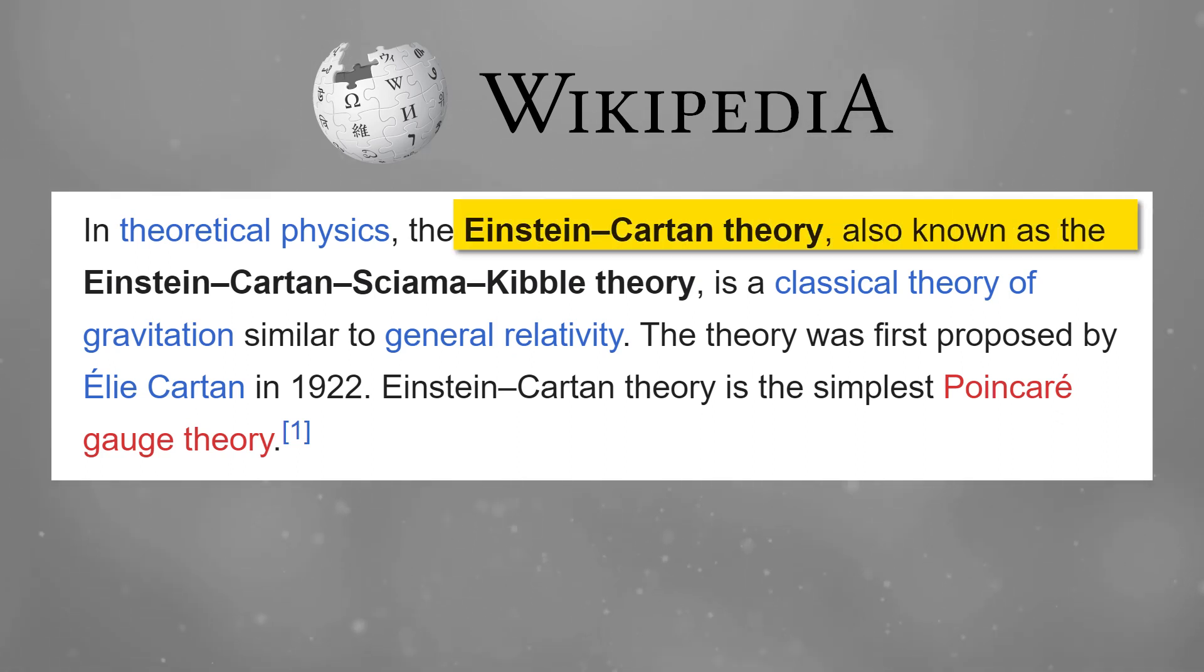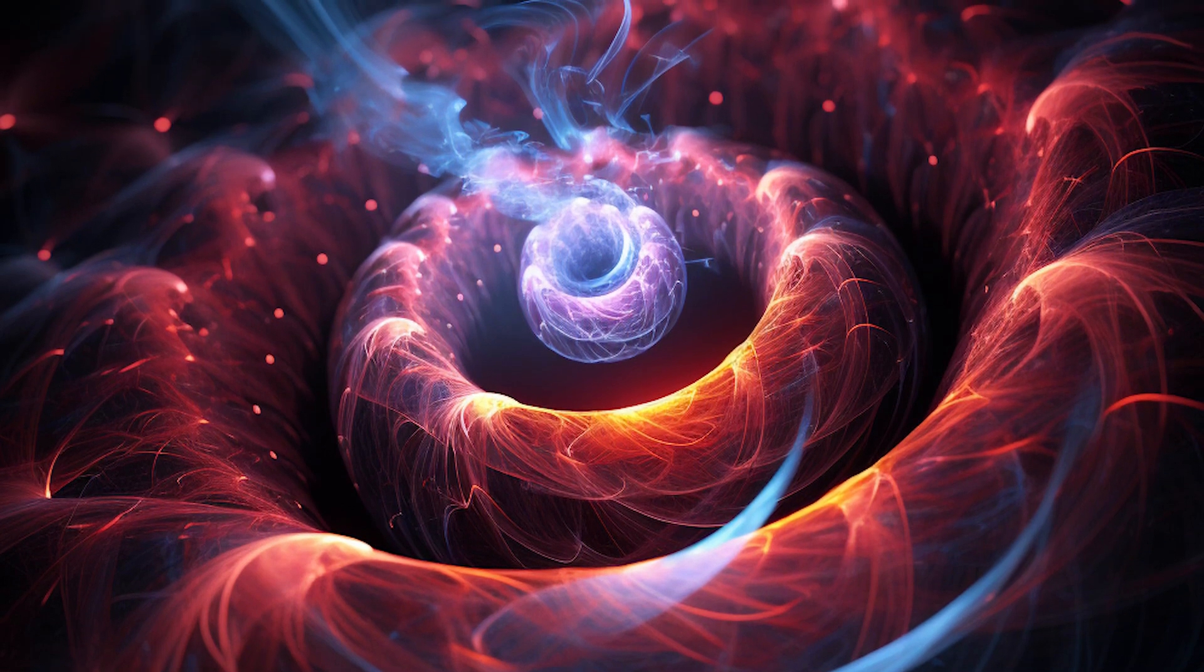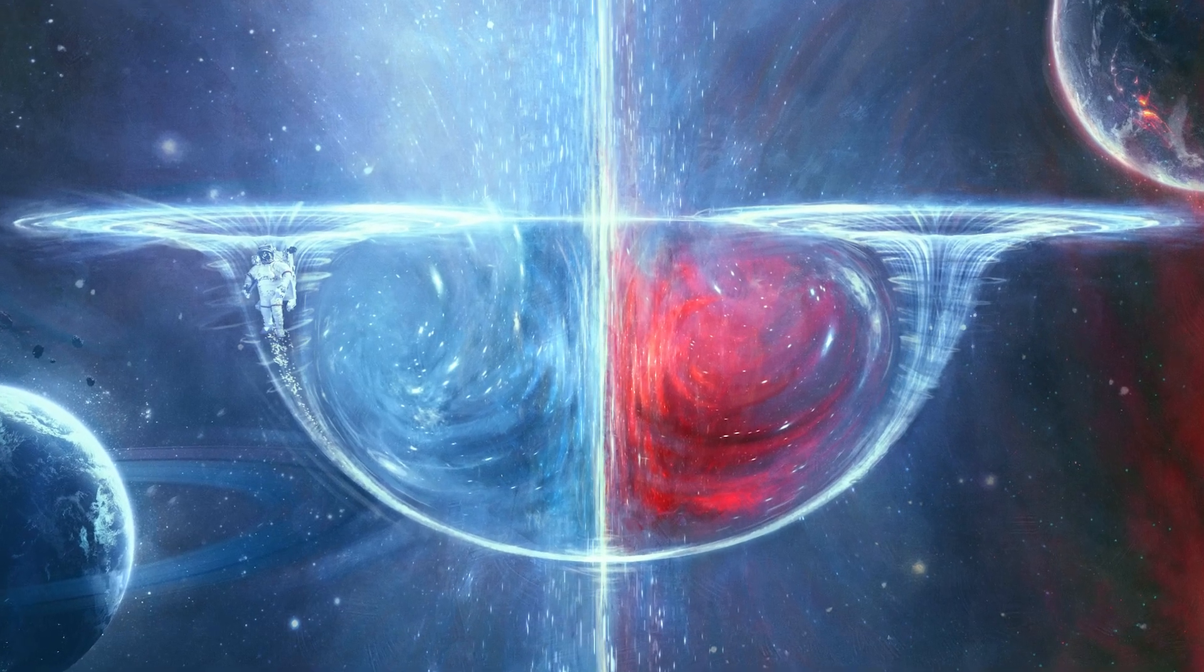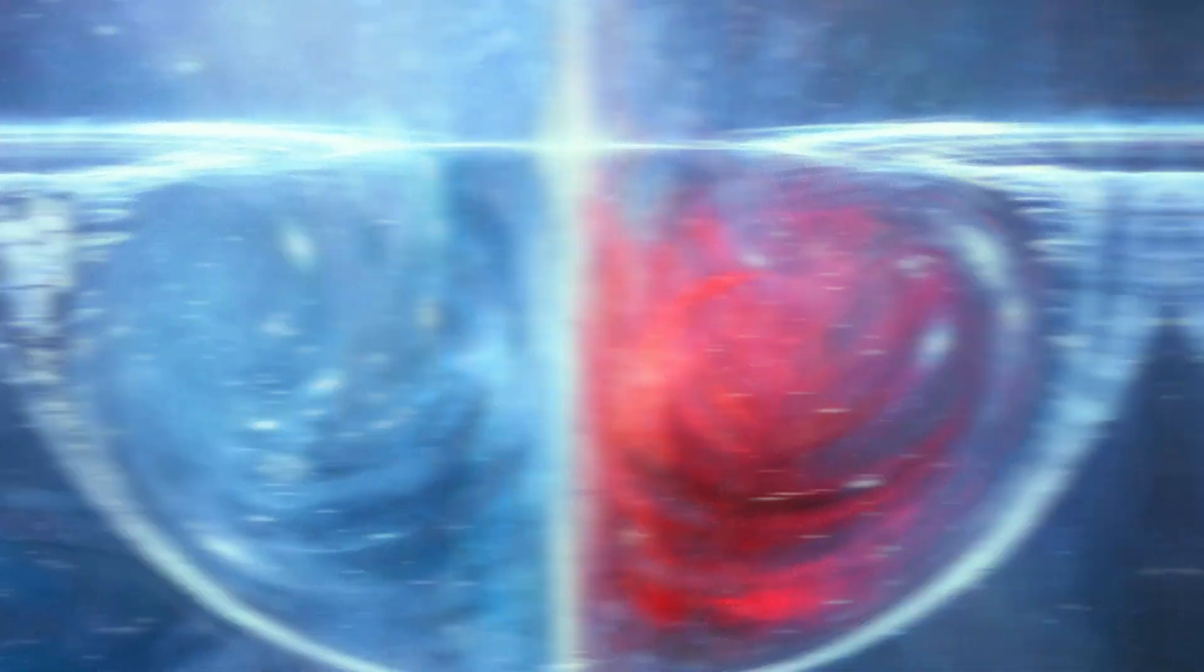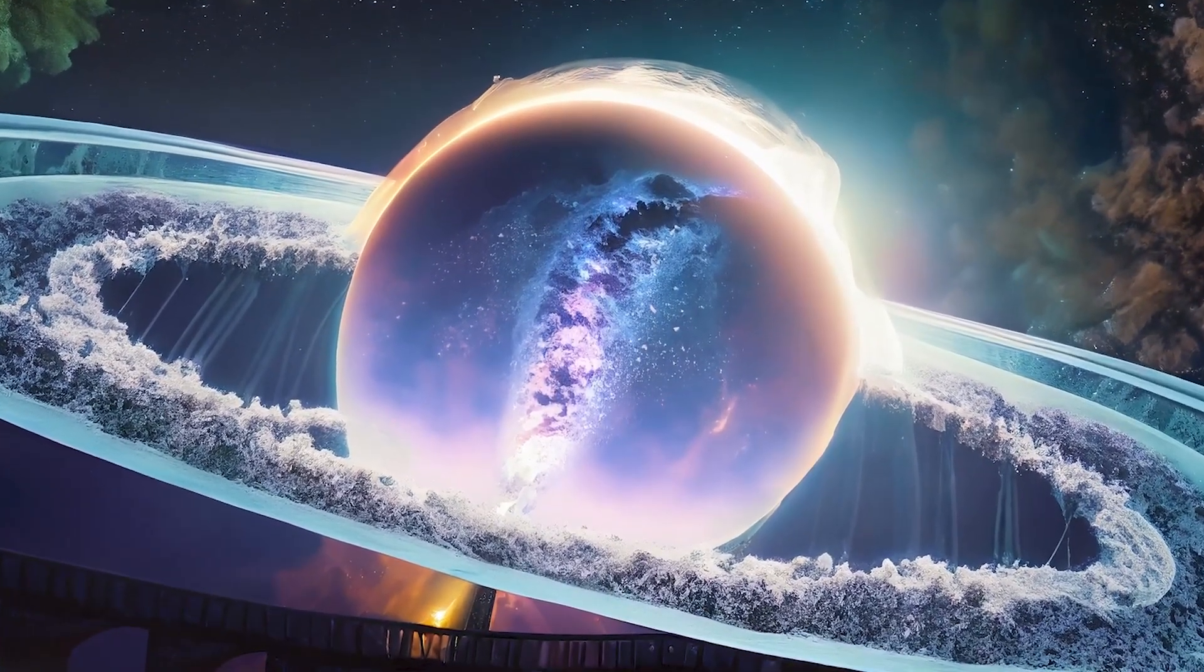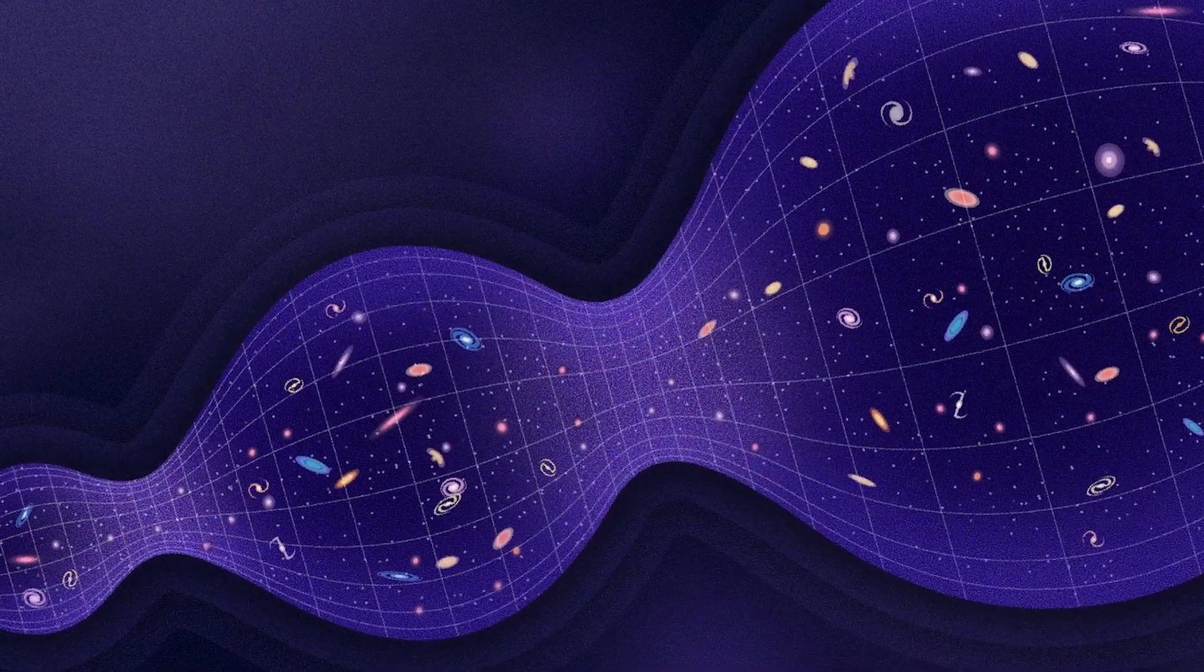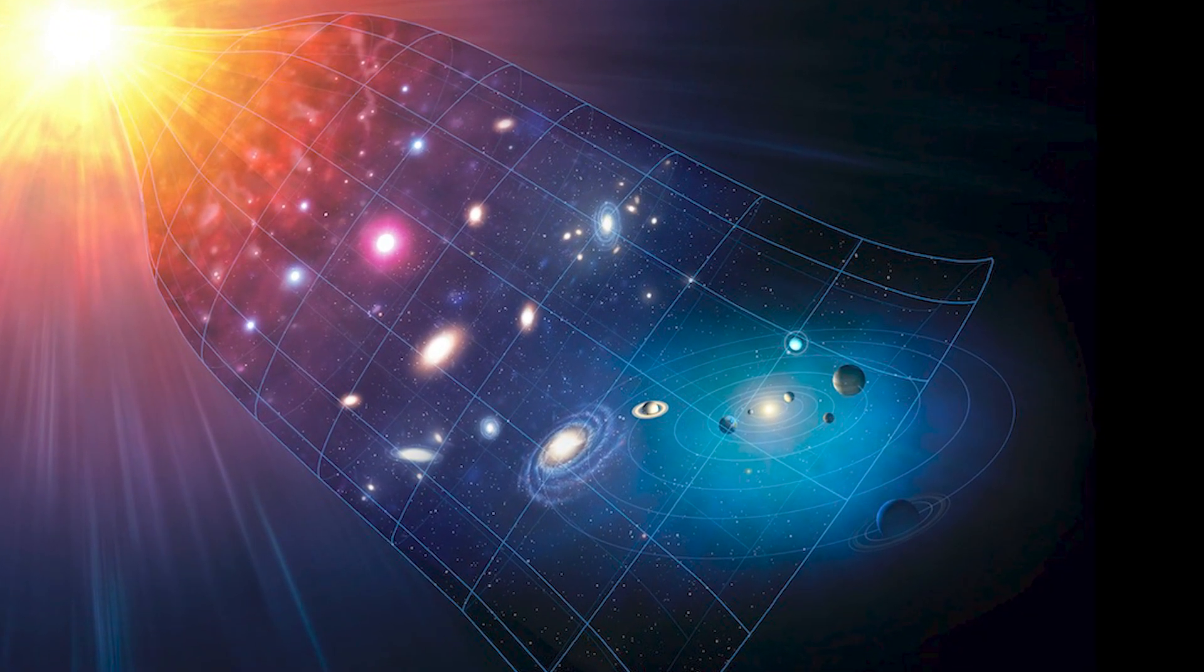There's a theory of gravity known as the Einstein-Cartan-Siyama-Kibble theory, which is based on the principles of general relativity. It includes something called torsion, which accounts for the spin of particles in quantum mechanics. It proposes that, under certain conditions, collapsing matter on the other side of a black hole's edge could bounce back and create a sort of bridge. This bridge leads to a new universe, like a baby universe, growing inside a black hole. This idea suggests that the Big Bang might have been like a big bounce when our universe started growing from a minimal size.